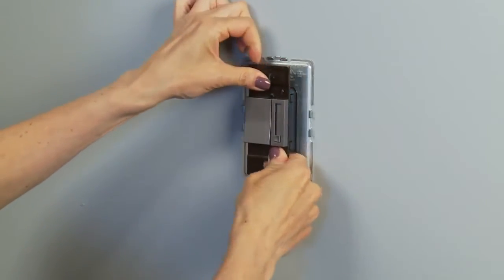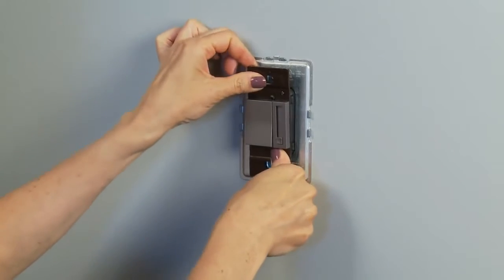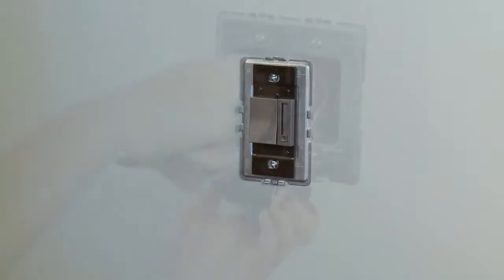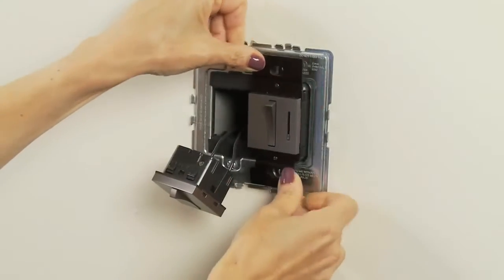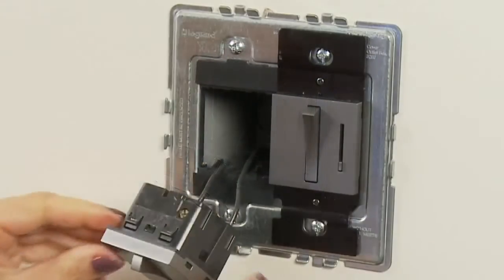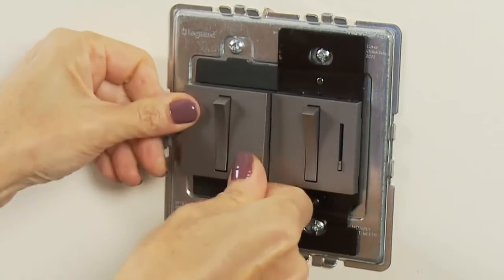Snap your device into the frame, pushing firmly until you hear a snap. If you are wiring more than one device in a two-gang, three-gang, or four-gang configuration, wire all of the devices before snapping any of them into the frame.